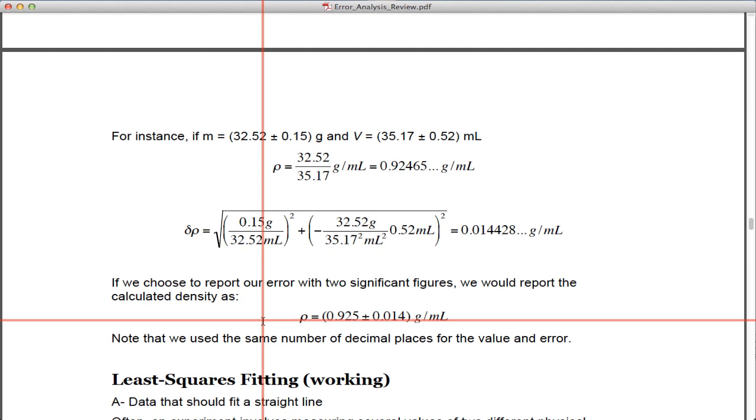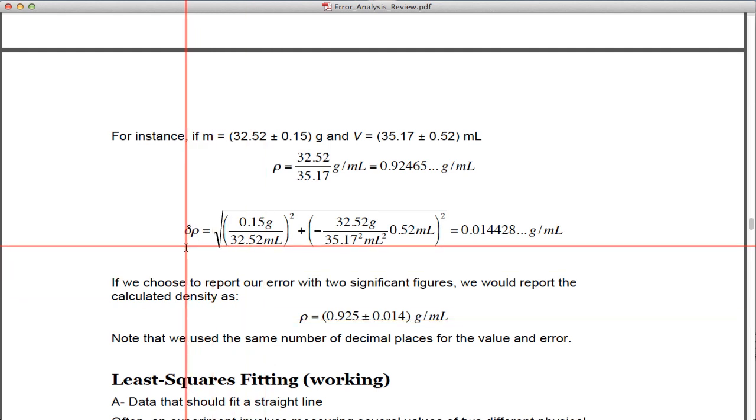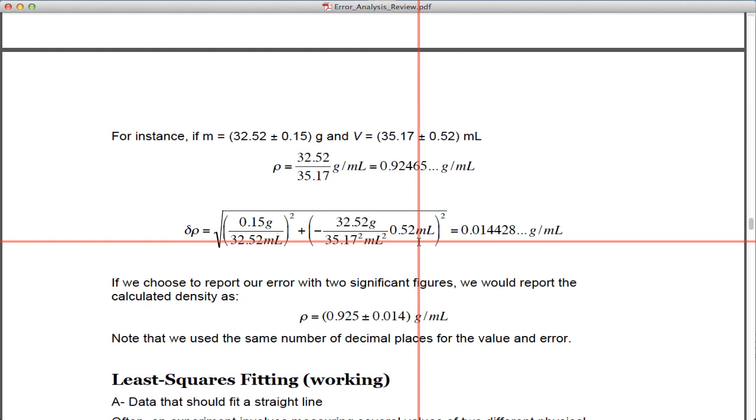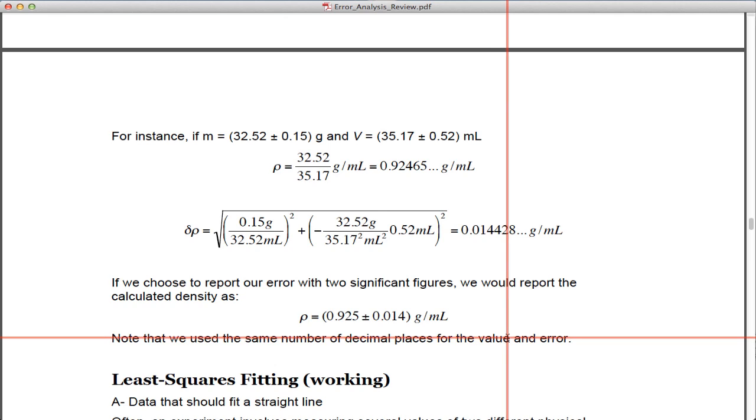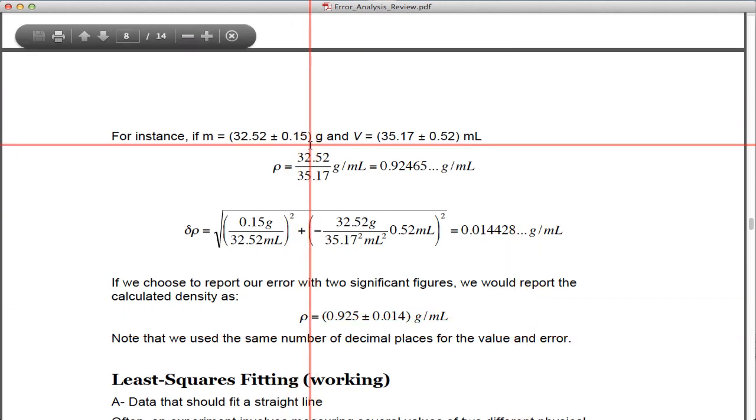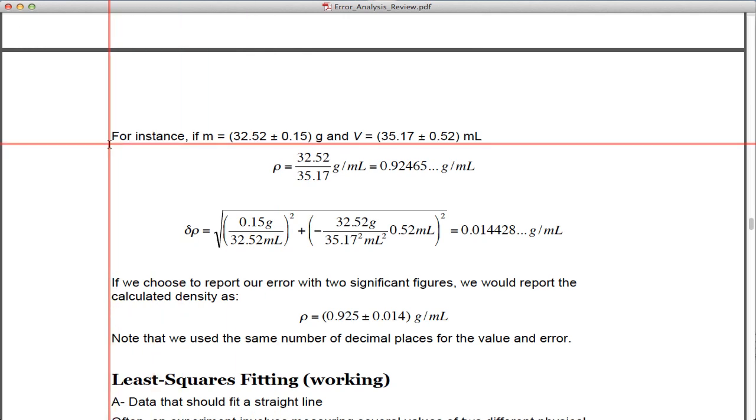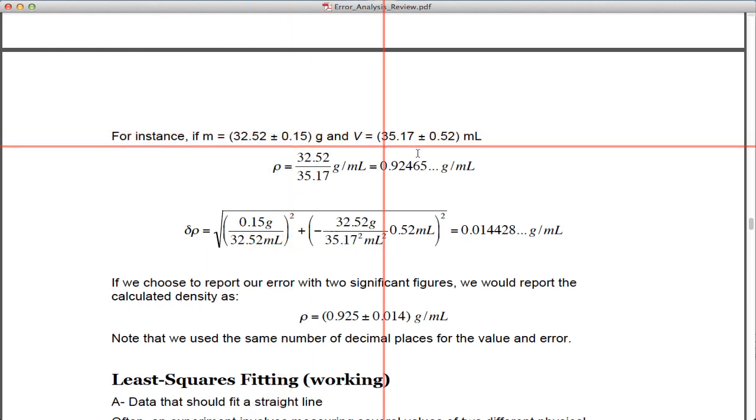And then the way I determine the error, the plus or minus error in that, is to take the partial with respect to each one times the error in that, the partial with respect to volume times the error in that, and then take the square of both of those and the square root. And that gives me the overall error associated with it. One of the most common misconceptions here is that you just do the same operation with the errors that you would with the measurement itself. In other words, that the error estimation would just be 0.15 divided by 0.52, which is roughly 0.3, I think 0.2888, which obviously is a huge overestimation of what this equation gives as the error.